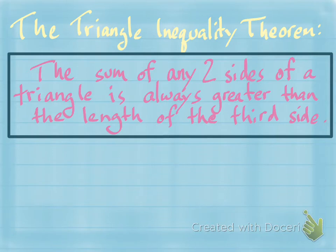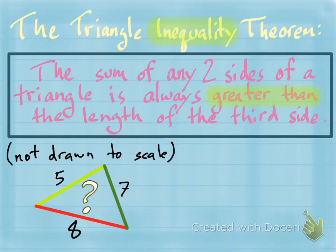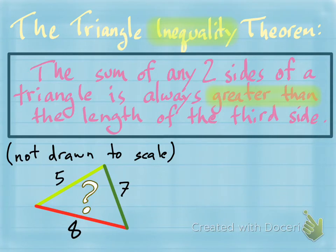In other words, if you have any triangle in the world and you take any two sides and add up those lengths, that number has to be greater than the length of the third side. This brings up an interesting question: if I take a triangle with sides five, seven, and eight, is that triangle even possible? It turns out not just any three numbers can be the sides of a triangle. That's why it's called the triangle inequality theorem — we use greater than or less than symbols to test this idea out.